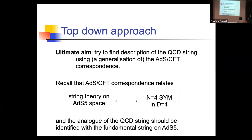The ultimate aim is to find a description of the QCD string from a top-down approach, using a generalization of the AdS-CFT correspondence. As was already explained, this is not entirely trivial. Part of the problem is that we understand the AdS-CFT correspondence very well in detail where the theory is not confining — say N=4 super Yang-Mills — being dual to string theory in AdS-CFT.